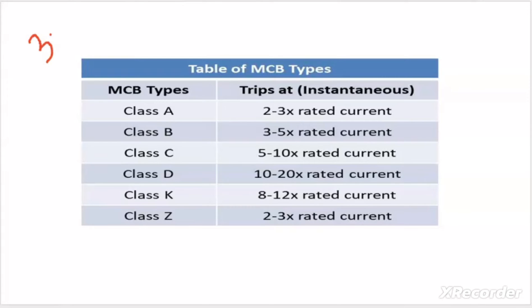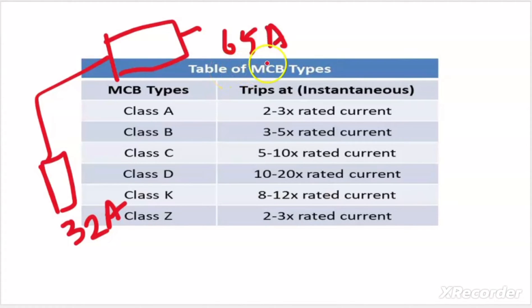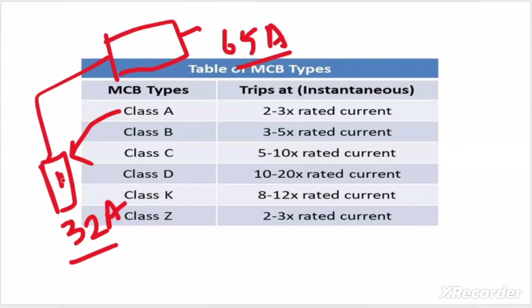For example, suppose I have a 32 ampere circuit breaker with a C curve rating, and it is feeding a motor that draws 65 ampere at startup. That inrush current is greater than the circuit breaker rating, which would normally cause it to trip. However, we know this 65 ampere inrush current at starting is temporary and will vanish in 3 to 4 seconds. The curve rating allows the circuit breaker to hold this 65 ampere for that interval without tripping, which is our desired requirement.